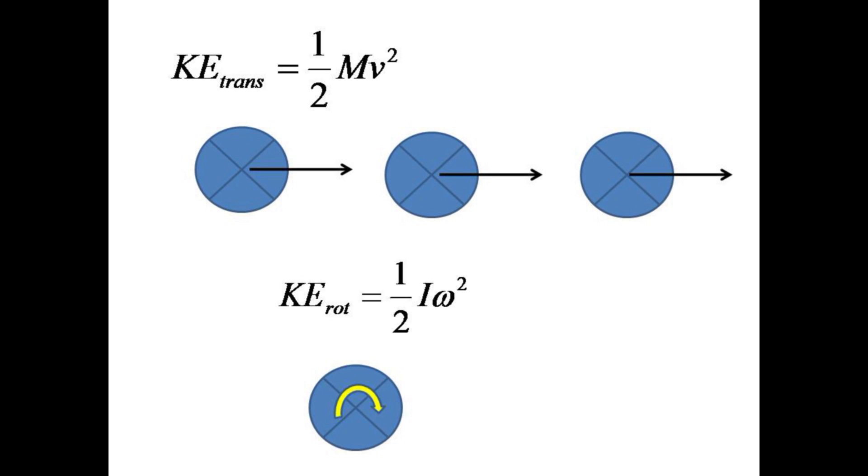An object can have kinetic energy due to translation, one half mv squared, as well as a separate rotational kinetic energy given by one-half i omega squared.